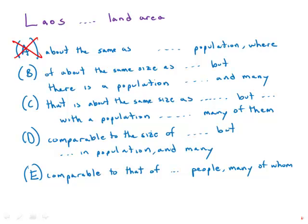Answer B: 'land area about the same size as Great Britain' — that's a little wordy but it works, so we'll put a question mark there. Answer C: 'land area that is about the same size as Great Britain' — that's even wordier. We have this wordy phrase 'that is about the same size as Great Britain's land area,' and then 'with a population of only 4 million people' — also wordy.